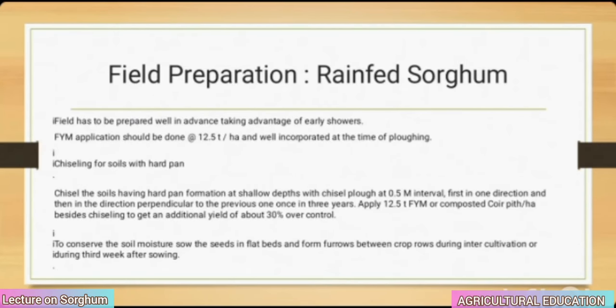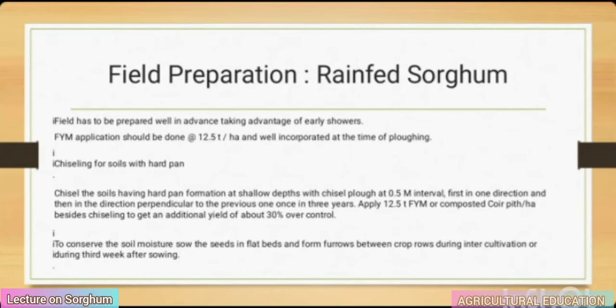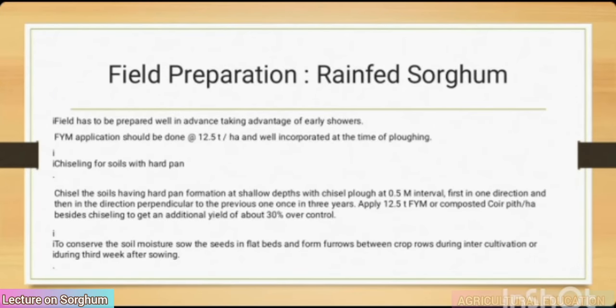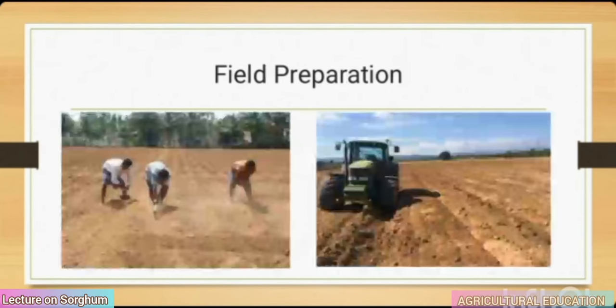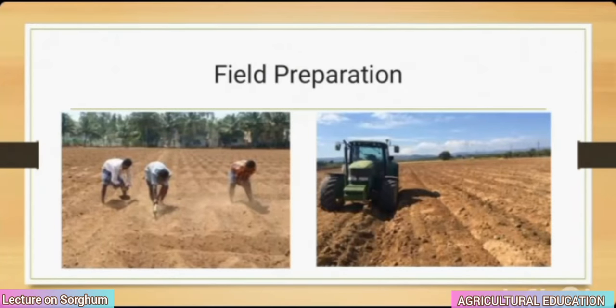To conserve soil moisture, sow the seeds in flat beds and form furrows between crop rows during intercultivation or during the third week after field preparation.